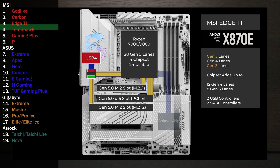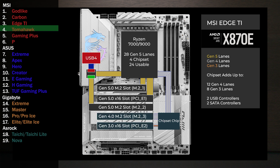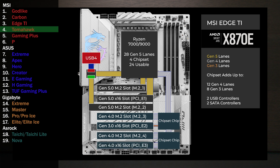On to the chipset connecting with the four-lane uplink. Four lanes go to a third M.2. One Gen 3 lane goes to a x16 slot. The first chip connects to the second, and four lanes go to the fourth M.2. Finally, four lanes at Gen 4 go to another x16 slot.